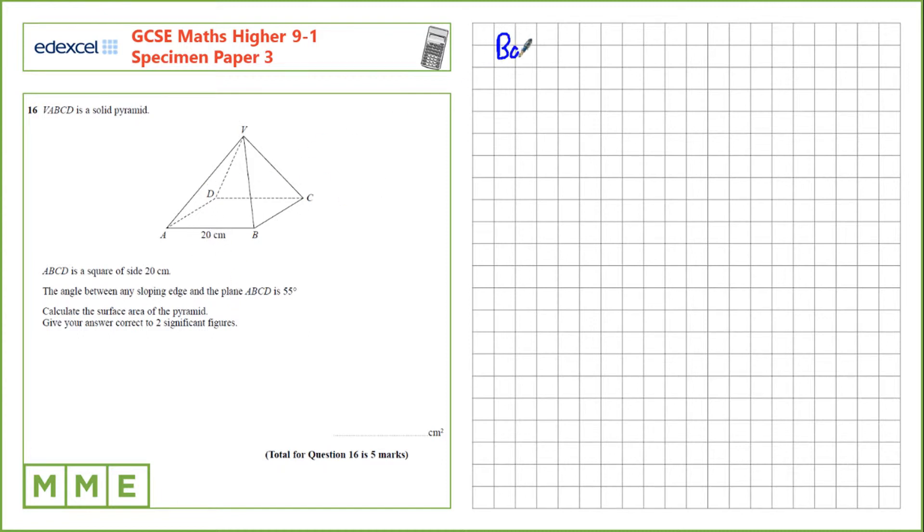First we know the base is a square of side 20 cm, that's 20 times 20, which is 400 cm squared. Now in order to calculate the area of one of these faces we need the height. To do that we're going to need to know the vertical height and then we can calculate it from there.